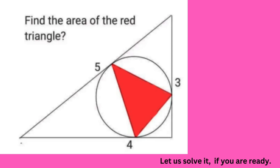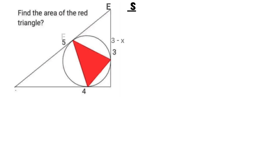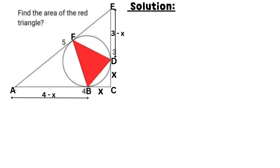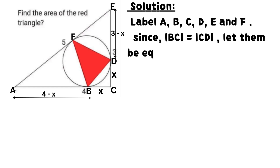Find the area of the red triangle. Label the points A, B, C, D, E, and F.